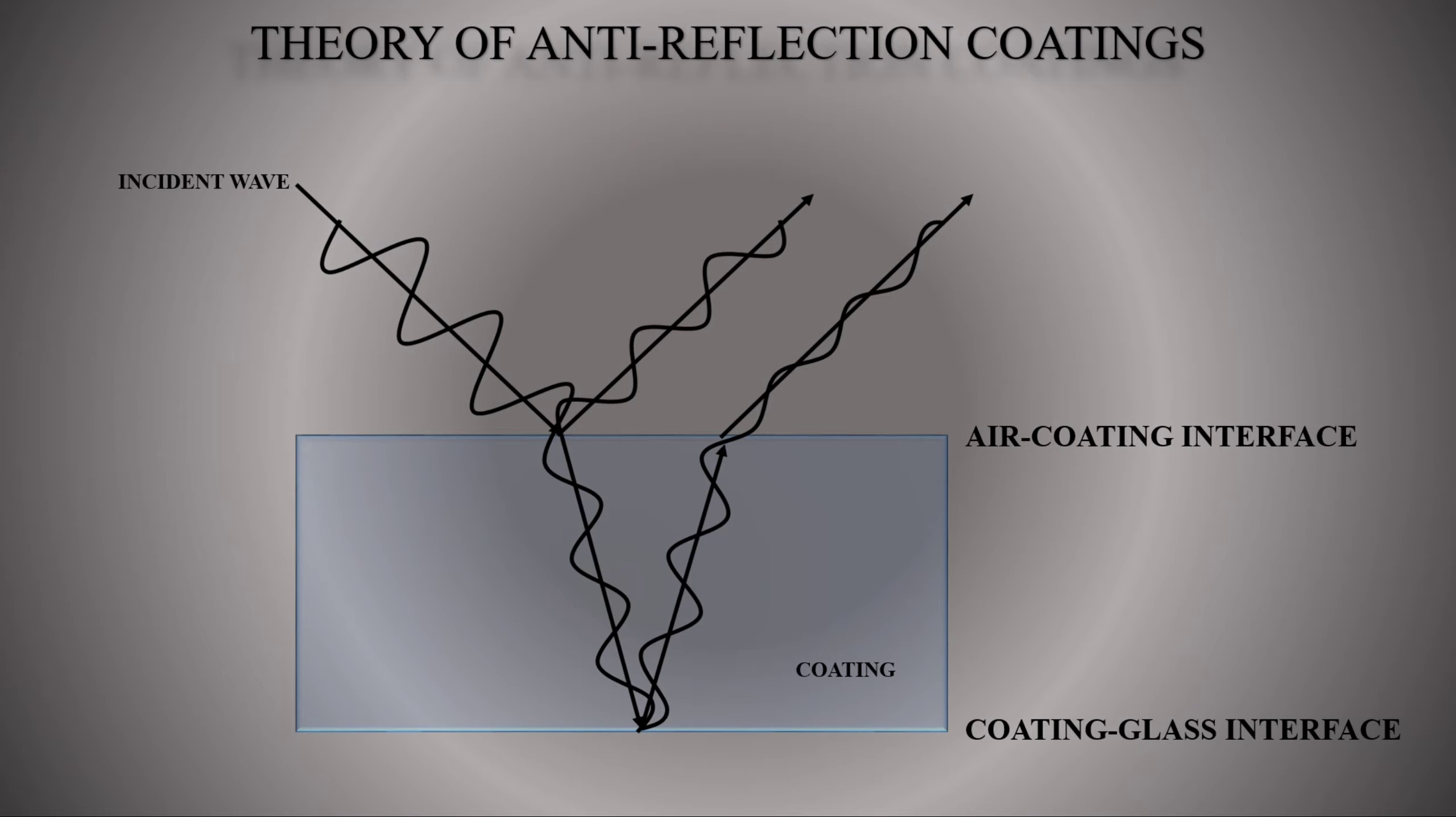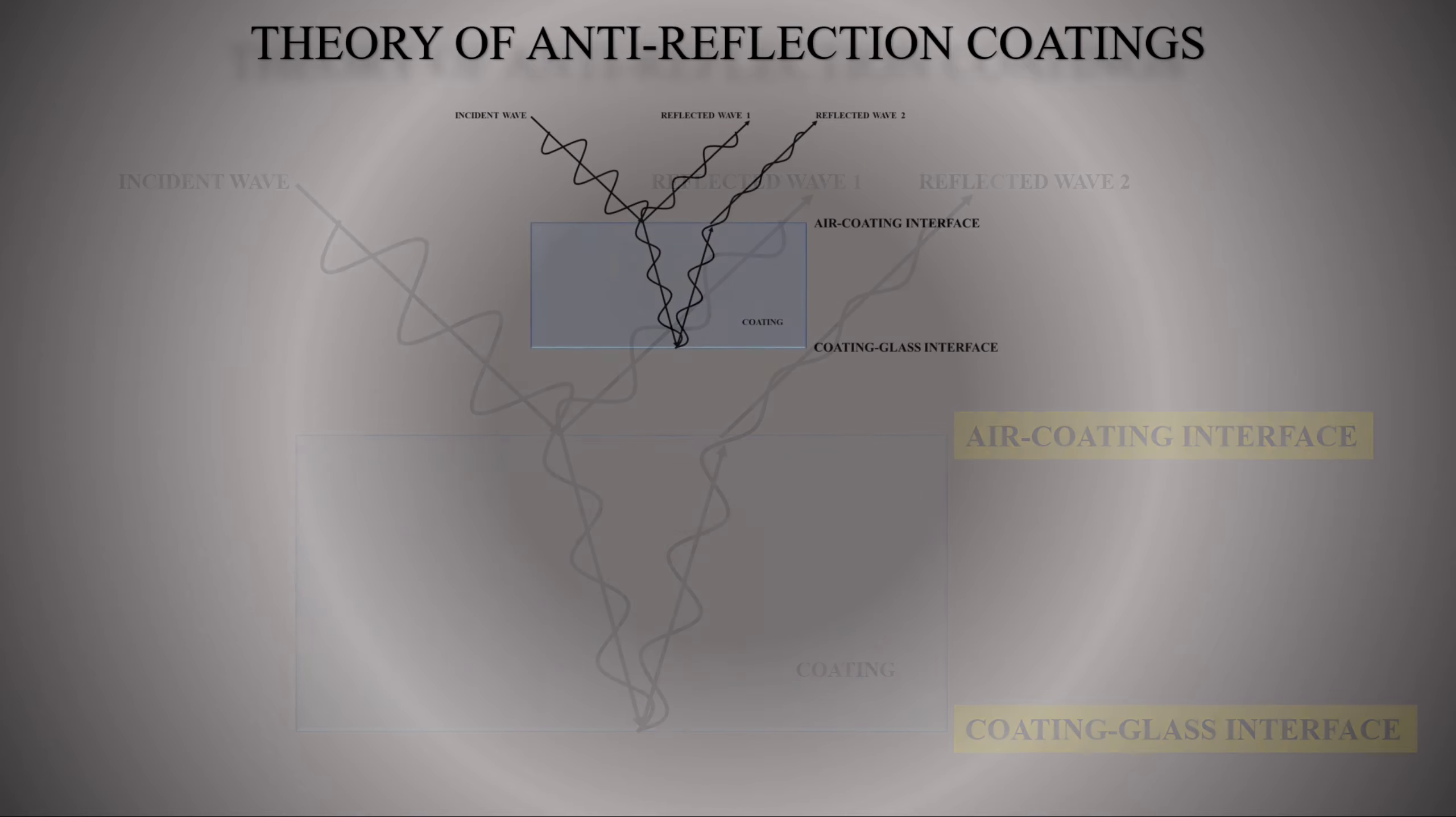When a transparent coating has been applied to the surface of an ophthalmic lens, two reflection waves will occur. One from the front surface of the coating and one from the lens surface, the interface between the coating and the lens. According to the principles of interference, these two reflection waves will cancel one another in two conditions: amplitude condition and path condition.